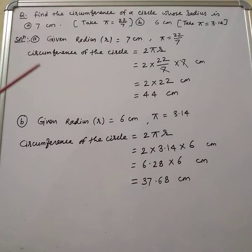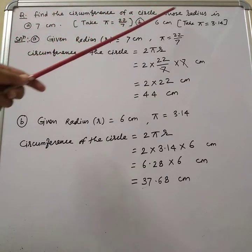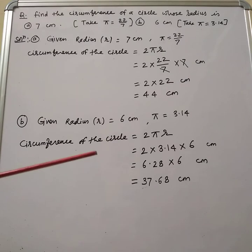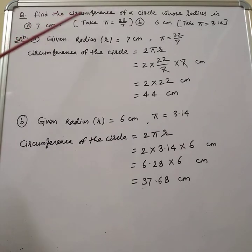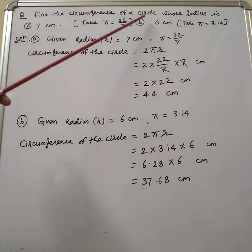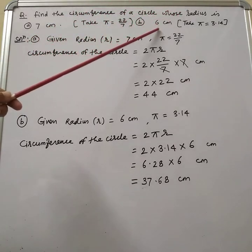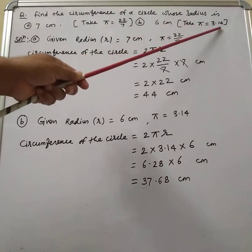Hello everyone, today we have to learn to find the circumference of a circle whose radius is given. The first question is: find the circumference of a circle whose radius is 7 cm, taking pi equal to 22 by 7. The second question: find the circumference of a circle whose radius is 6 cm, taking pi equal to 3.14.